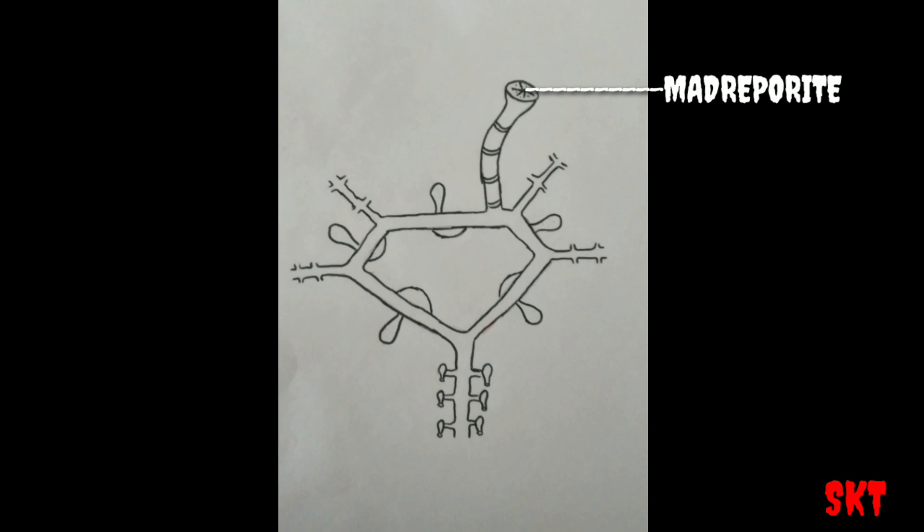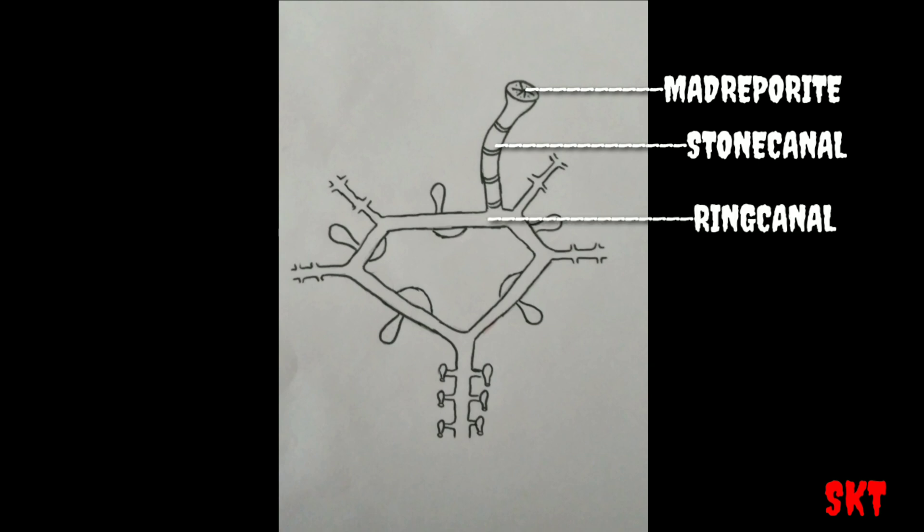The madreporite opens into an S-shaped, calcified canal called stone canal. This stone canal opens into pentagonal-shaped ring canal which surrounds the mouth in the oral surface.